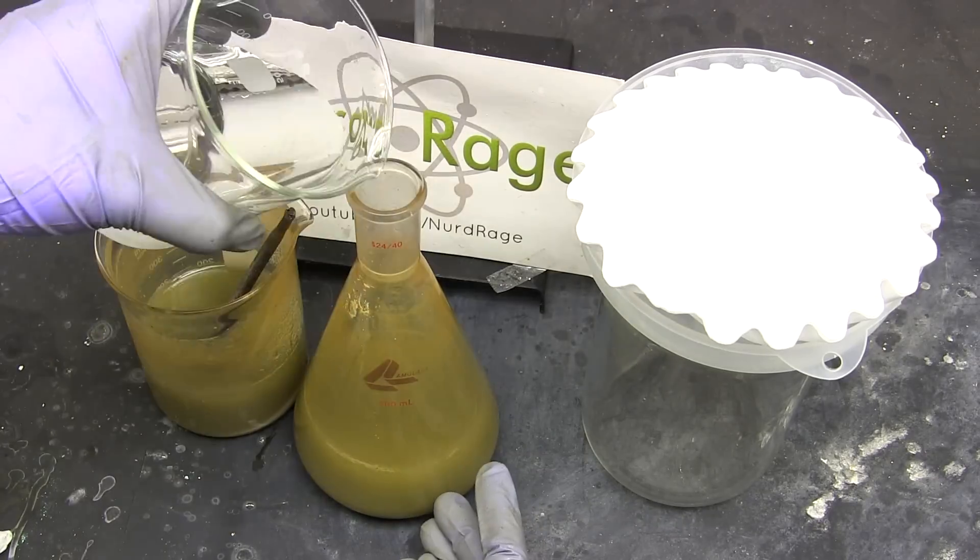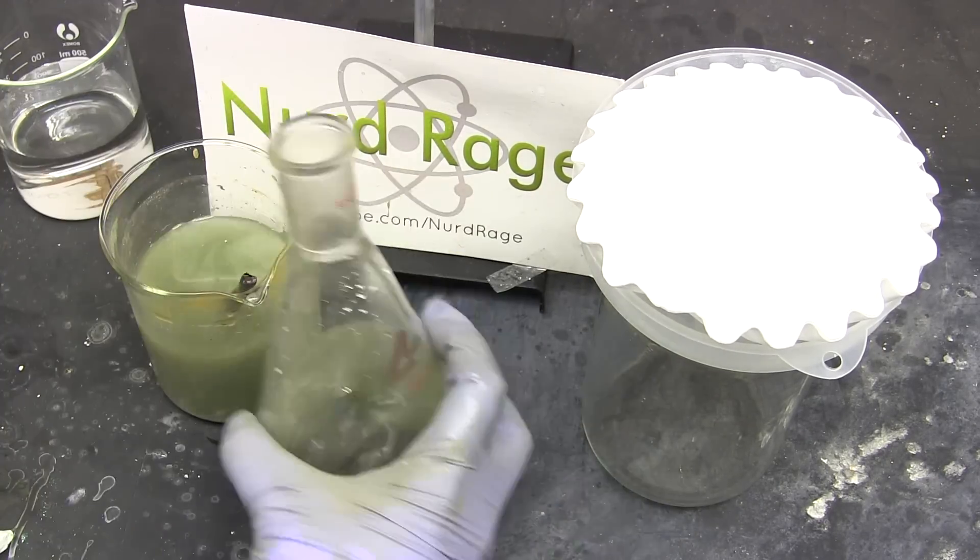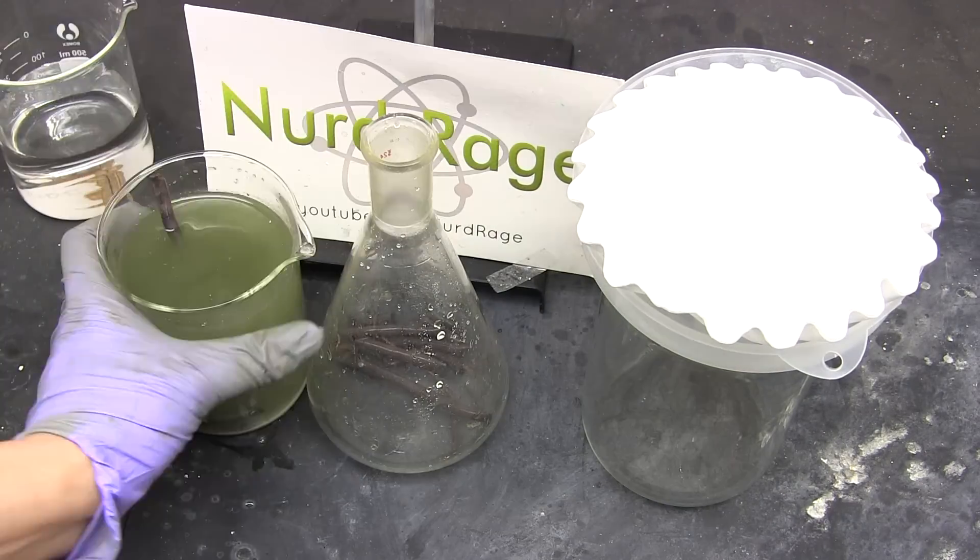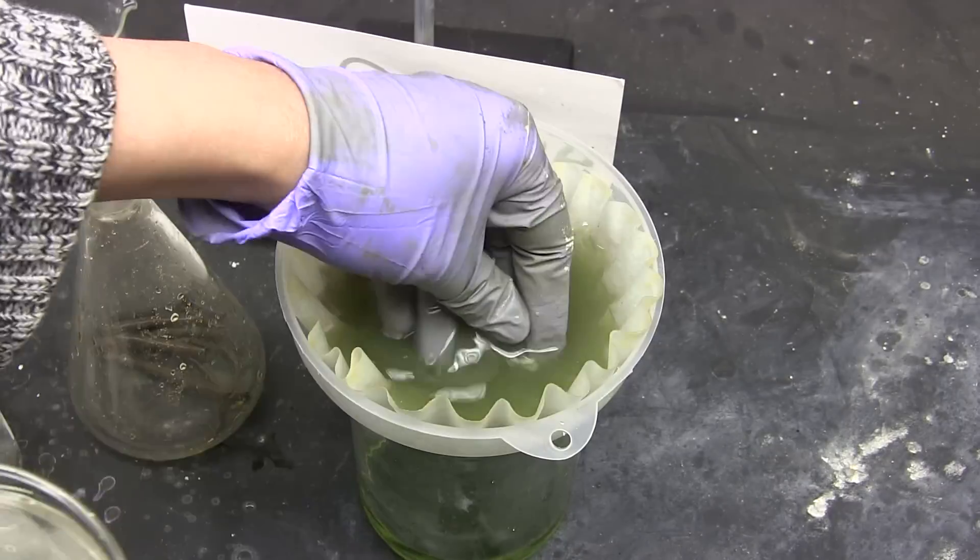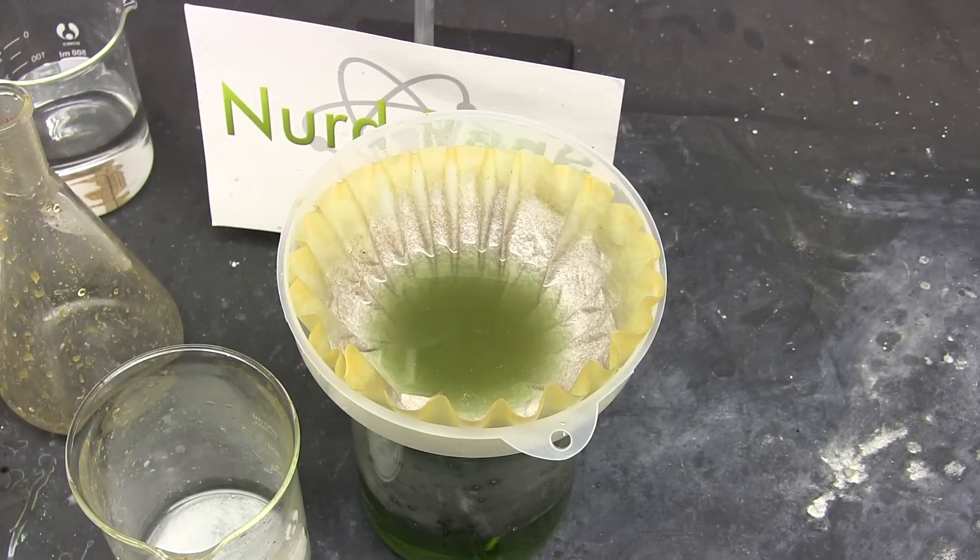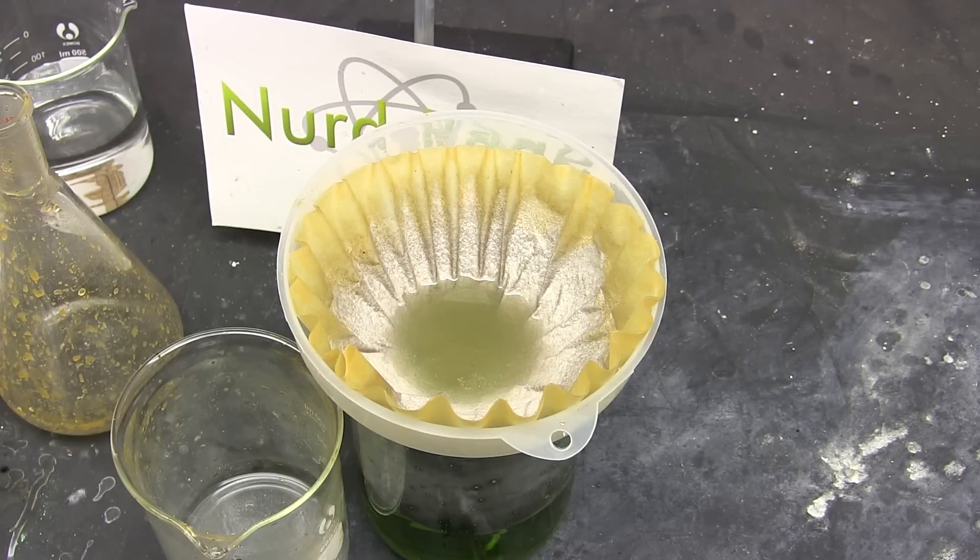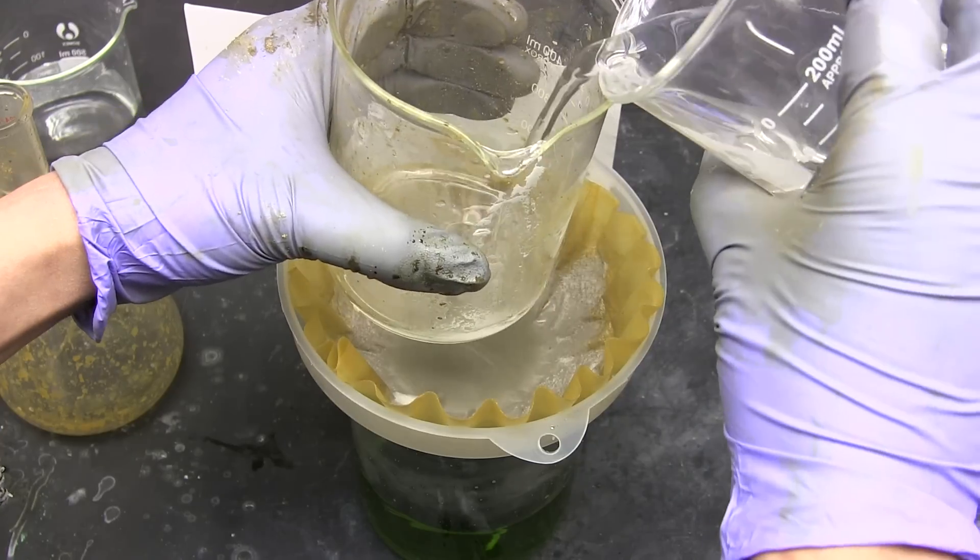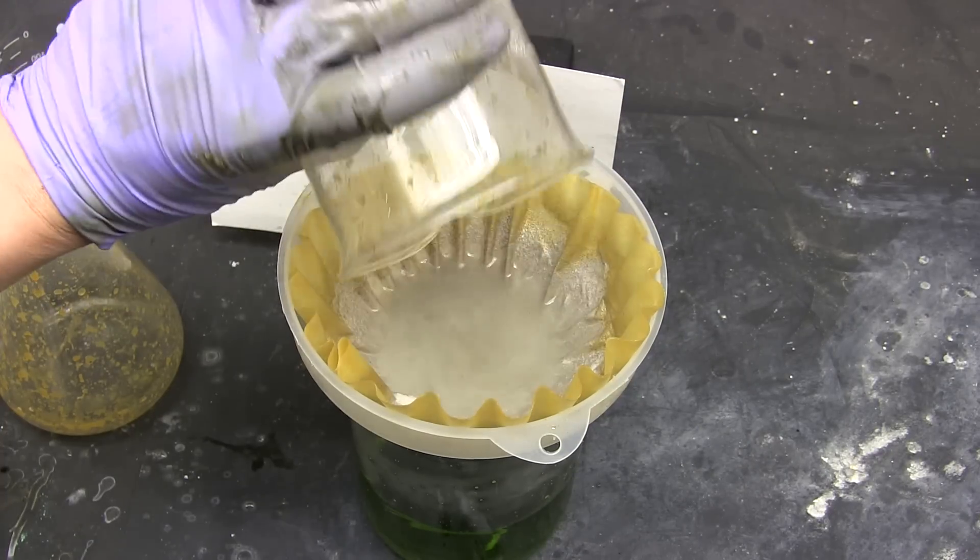Okay now once the solid residue is dissolved and it's just a suspension of fine white particles, filter the solution. At this point we are separating the copper from the iron. You can also take this opportunity to remove any remaining bits of copper metal. Be sure to wash out any remaining residues with water to ensure maximum recovery.